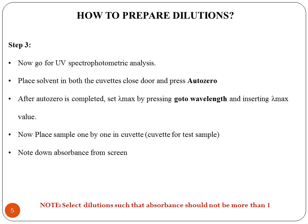Step 3 is UV spectrophotometric analysis. Place blank solvents or blank solutions or buffers in both cuvettes. Close the door and press AUTO 0 to perform baseline correction. After AUTO 0 is completed, set lambda max by pressing 'Go to Wavelength,' inserting the lambda max value, and pressing Enter. Place samples one by one in the cuvette. The cuvette on our side is for the test sample and the cuvette on the other side is for the blank solution — this is important to keep in mind.